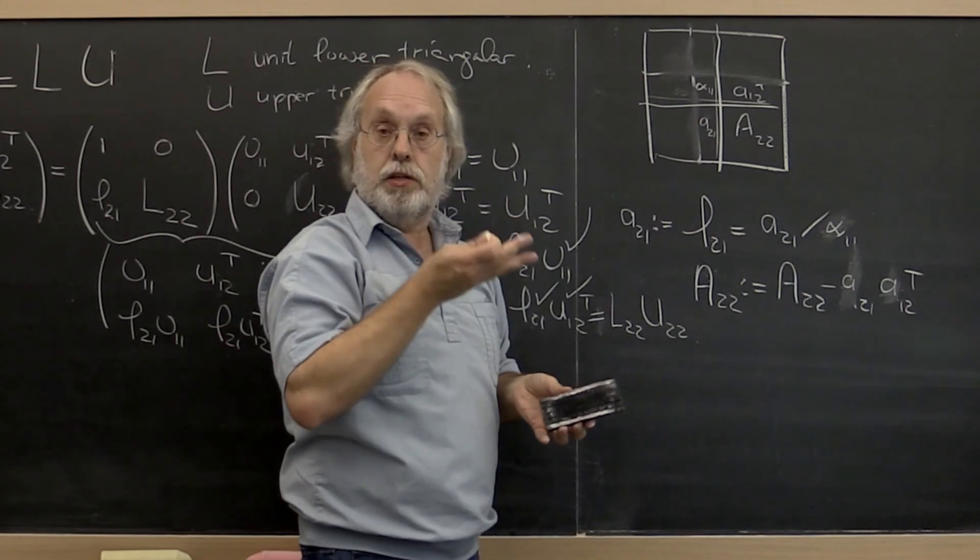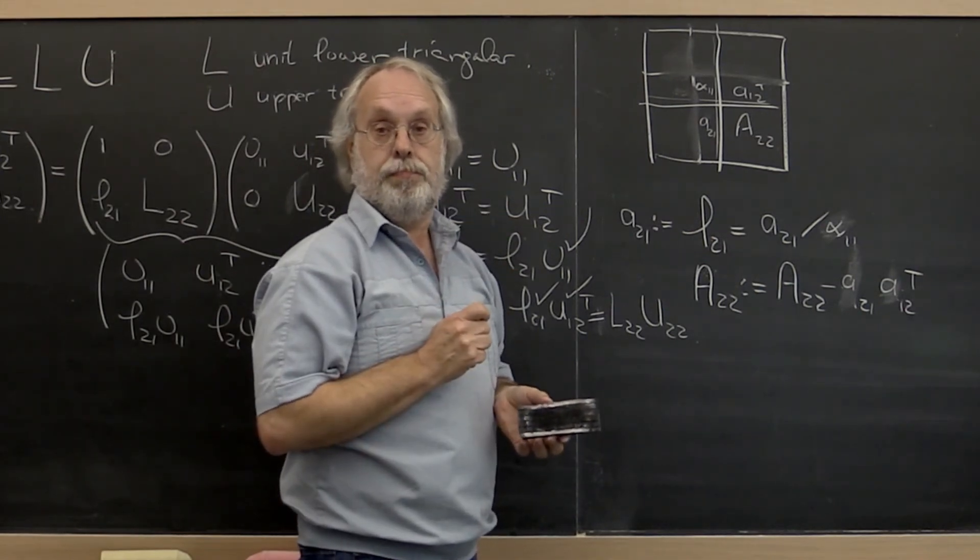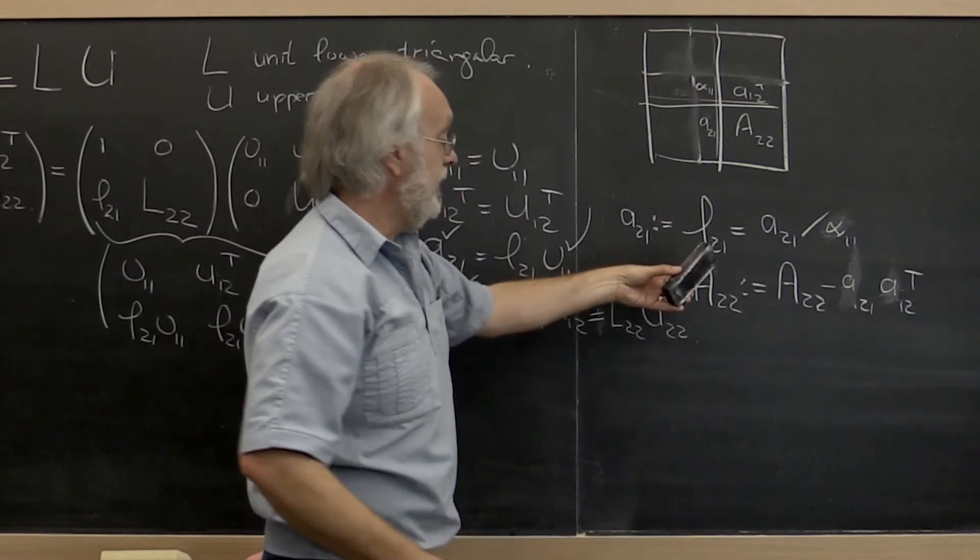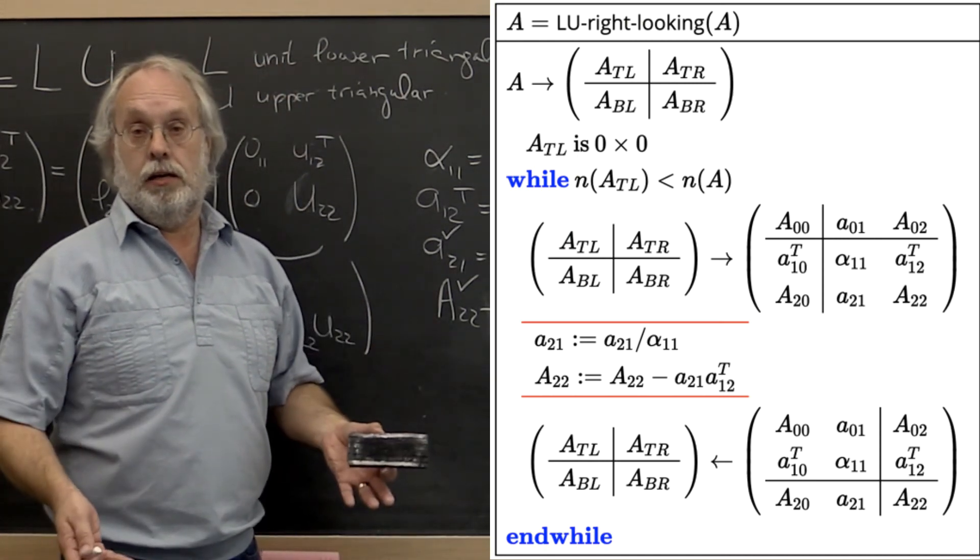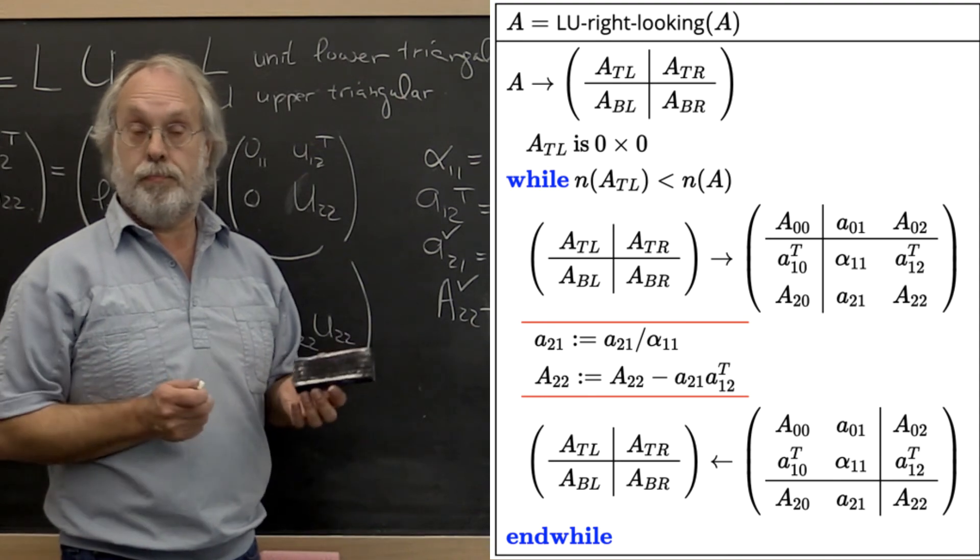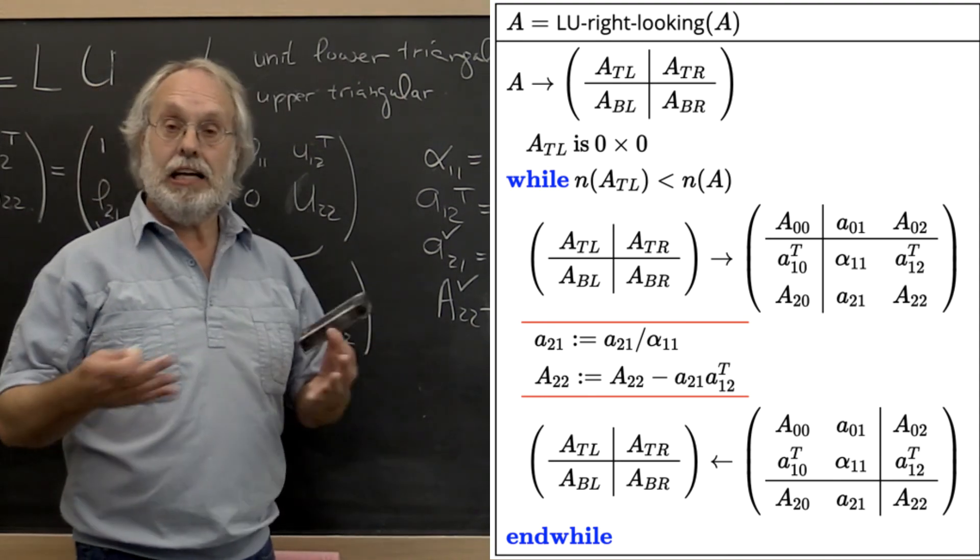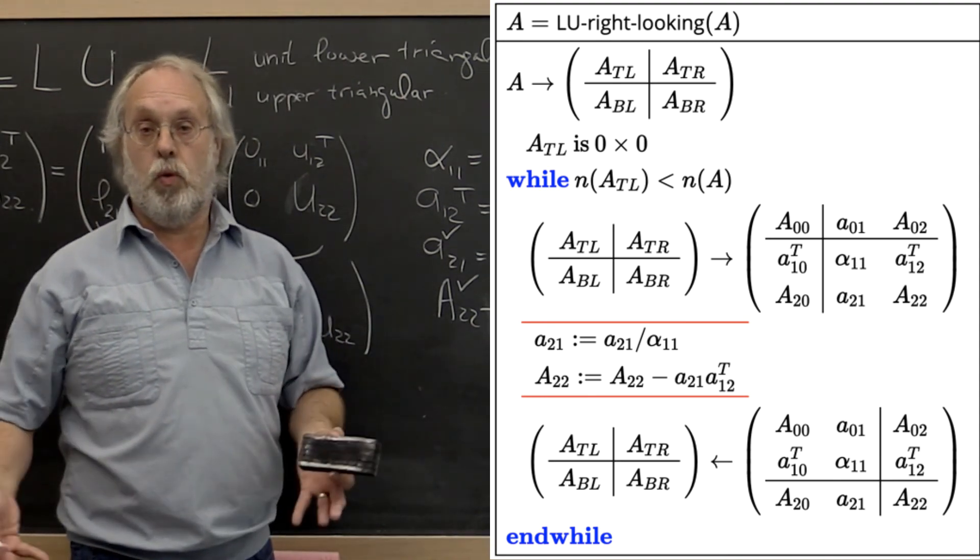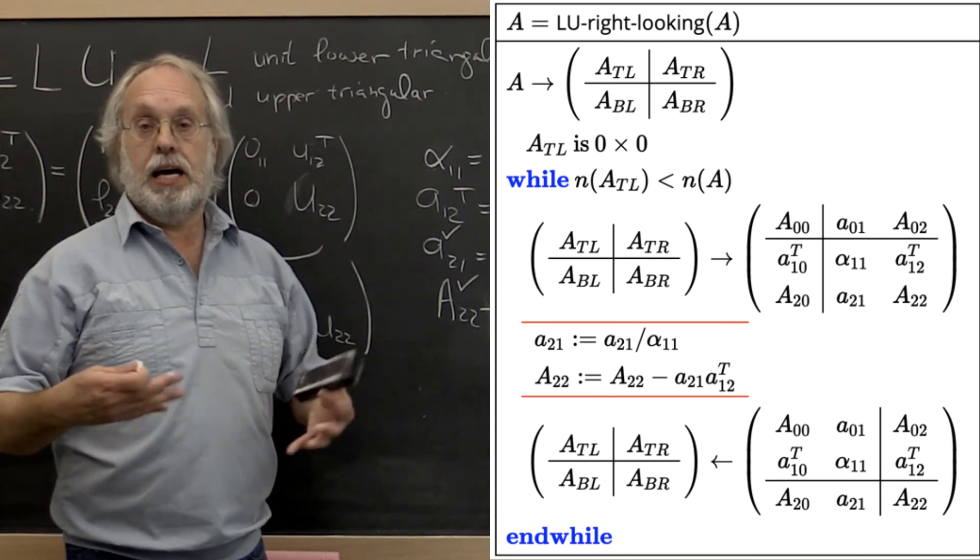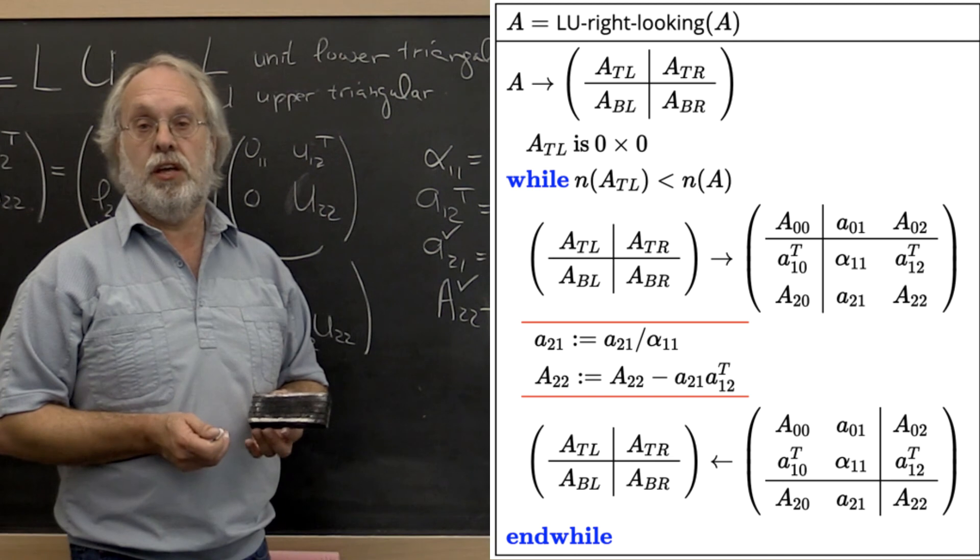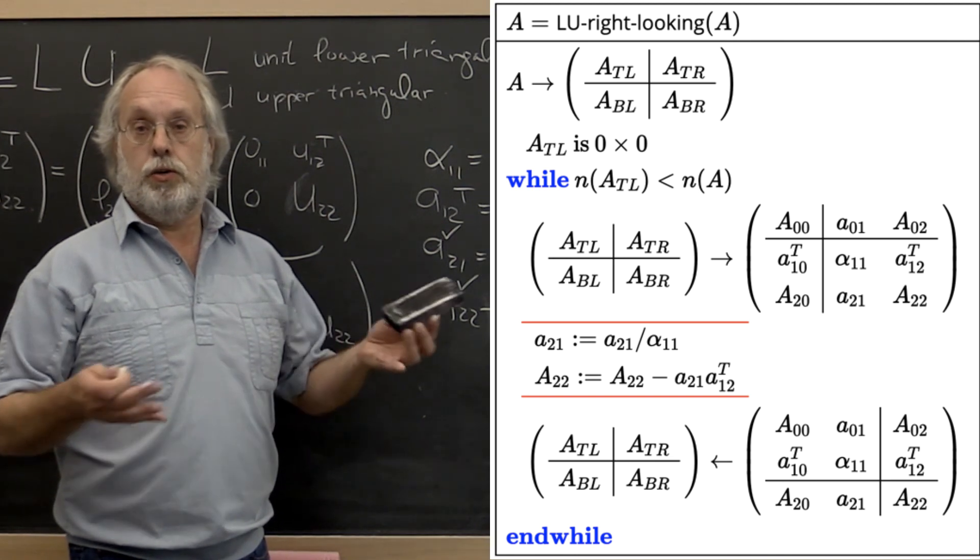And that's how we iterate through. What you notice is that the resulting algorithm is exactly the algorithm we presented in the launch, and exactly the algorithm that in the end we came up with when we discussed Gaussian elimination. And we typeset the resulting algorithm using the FLAME notation.